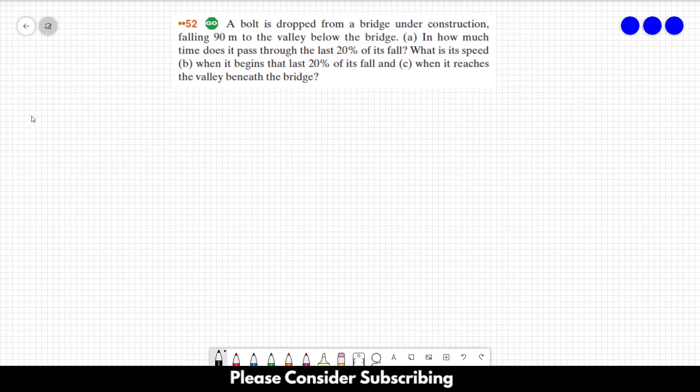So let's start from letter A. So this is a bridge over here. This is the bridge. A very beautiful bridge. And then we have a boat that is falling. And we want to know in the last 20% of the fall, so in the last 20%, how long does it take for the boat to pass this 20%. So what is our strategy here?